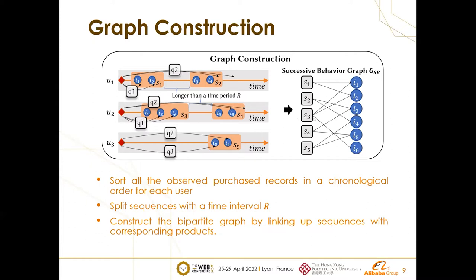Let's start from graph construction. Our successive behavior graph is constructed by utilizing short-term behaviors of all users. We have three steps: first, we sort all observed purchase records in chronological order for each user. Second, we split the sequences with a time interval r. Finally, we construct a bipartite graph by linking up sequences with their corresponding products. In such a way, we can extract global behavior patterns in different time granularities.